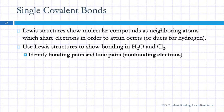Now we're going to talk about covalent bonding. The Lewis structures show molecular compounds as neighboring atoms that are sharing electrons so that everybody gets an octet, or for the little guys like hydrogen, a duet.